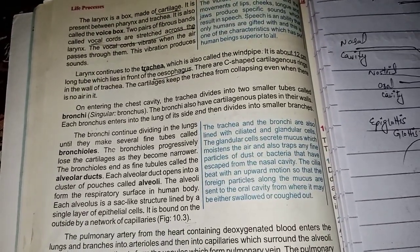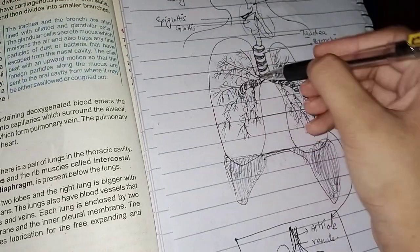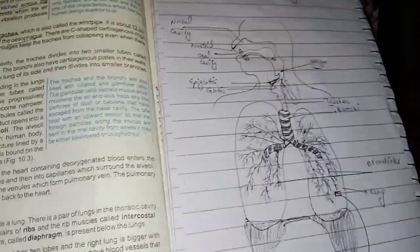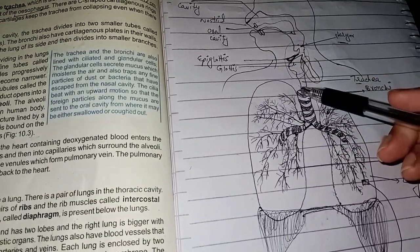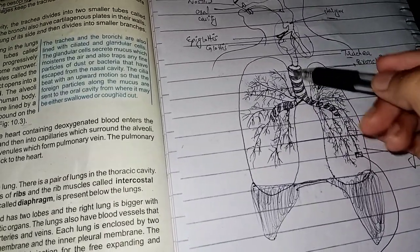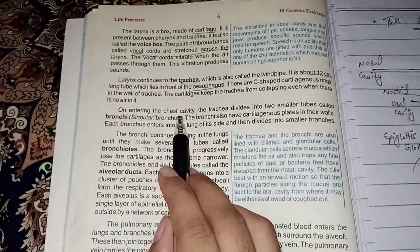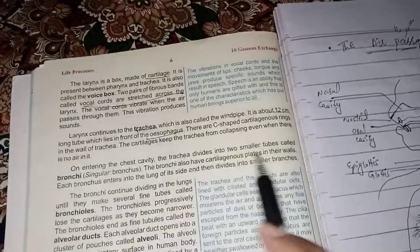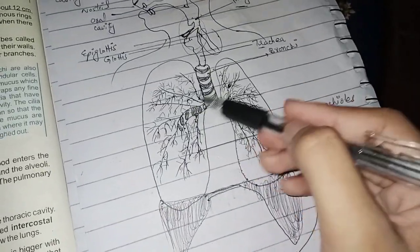The cartilage keeps the trachea from collapsing even when there is no air in it. These C-shaped bands have the power to keep the trachea open. The trachea then divides into two smaller tubes which are called bronchi.